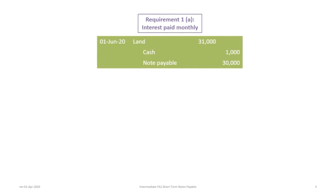We'll begin with requirement 1A, where interest is paid monthly. Our first journal entry is on June 1st to record the purchase of the land from Luther. We will debit land for $31,000, credit cash for the $1,000 down payment, and credit note payable for $30,000.